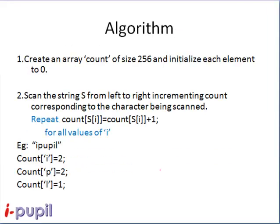We start by creating an array count of size 256. Here each value of count corresponds to a corresponding element in the ASCII table. We initialize every element of count to 0.